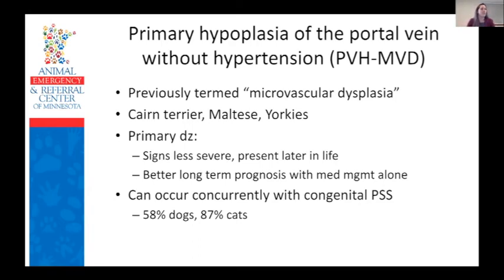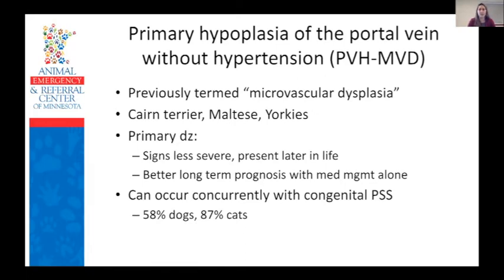On histopathology, this condition is characterized by small intrahepatic portal vessels, portal endothelial hyperplasia, portal vein dilation, random juvenile intralobular blood vessels, and central venous hypertrophy. It is communication between the portal and systemic circulation at the microvascular level. It can occur as a primary disease or in combination with a congenital portal systemic shunt. When seen as a primary disease, signs are often less severe, present later in life, and carry a better long-term prognosis with medical management alone. Predisposed breeds include Cairn Terriers, Maltese, and Yorkies. It's been reported that 58% of dogs and 87% of cats with PVH-MVD have concurrent macroscopic shunts.